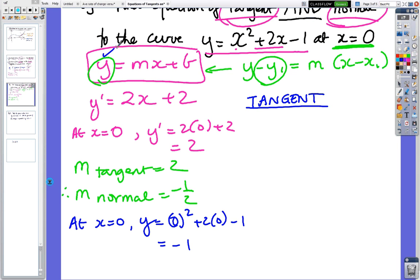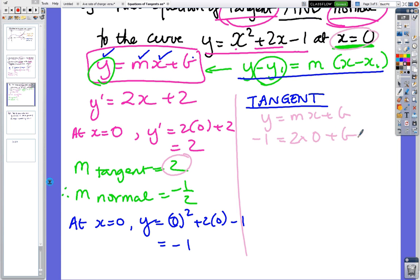So we've got y, we've got m, we've got x, we don't know what b is. Whereas if you use this form, you just put it in and the b value comes out. So let's have a look at the tangent. So y equals mx plus b. The y number is minus 1. The m value, we're doing the tangent, is 2. The x number is 0 plus b. So b equals minus 1. So the tangent is y equals 2x minus 1.